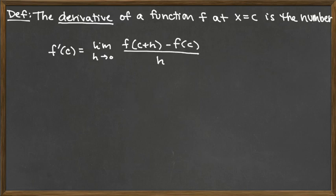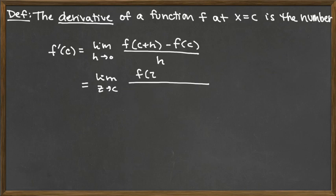That is our difference quotient where we have h approaching 0, like we talked about in the intuitive setup for this problem. The equivalent thing would be if we're not looking at h approaching 0, but rather z approaching c — what we would have then is our difference quotient f of z minus f of c over z minus c.